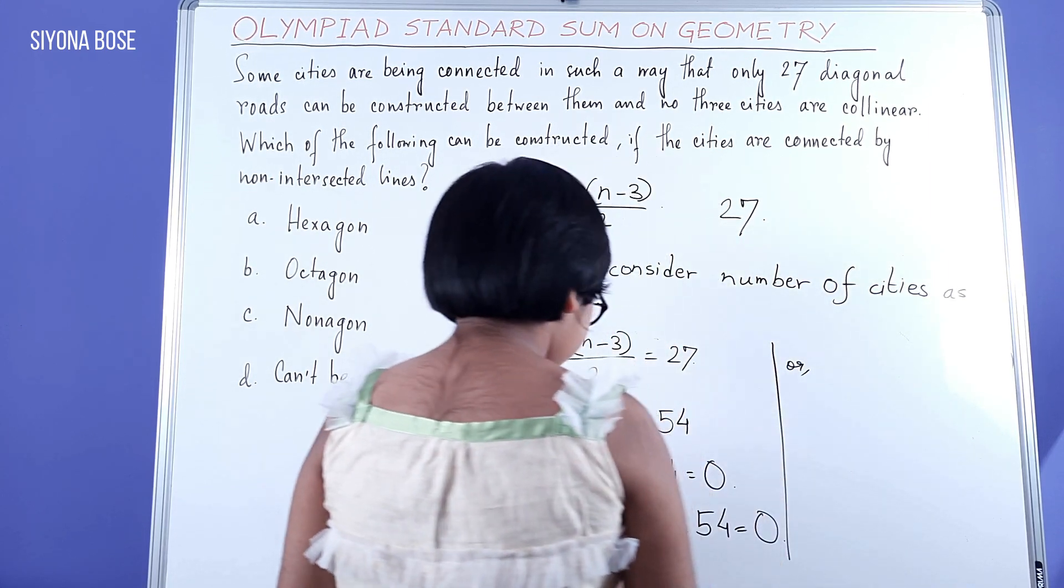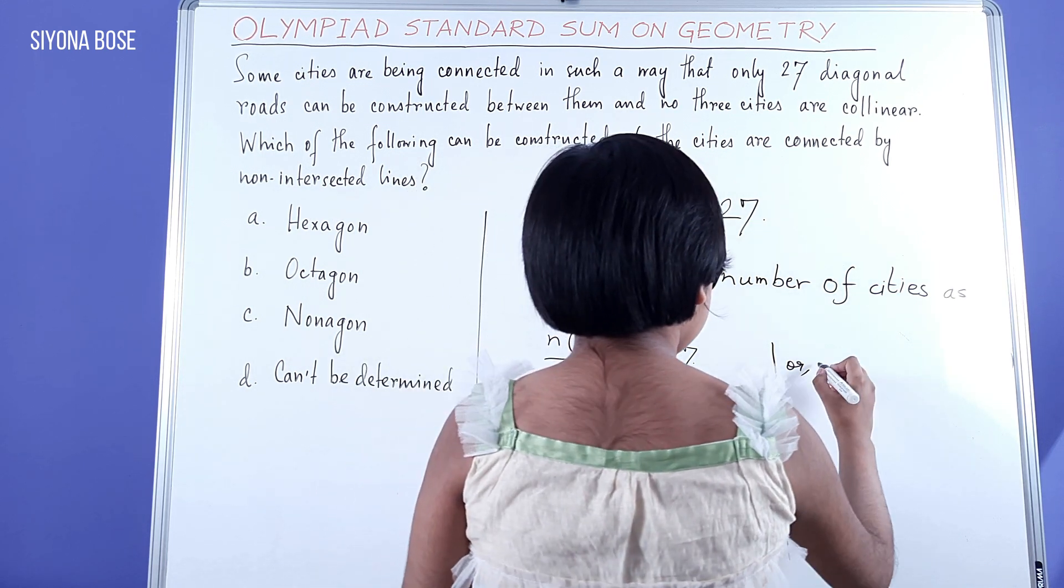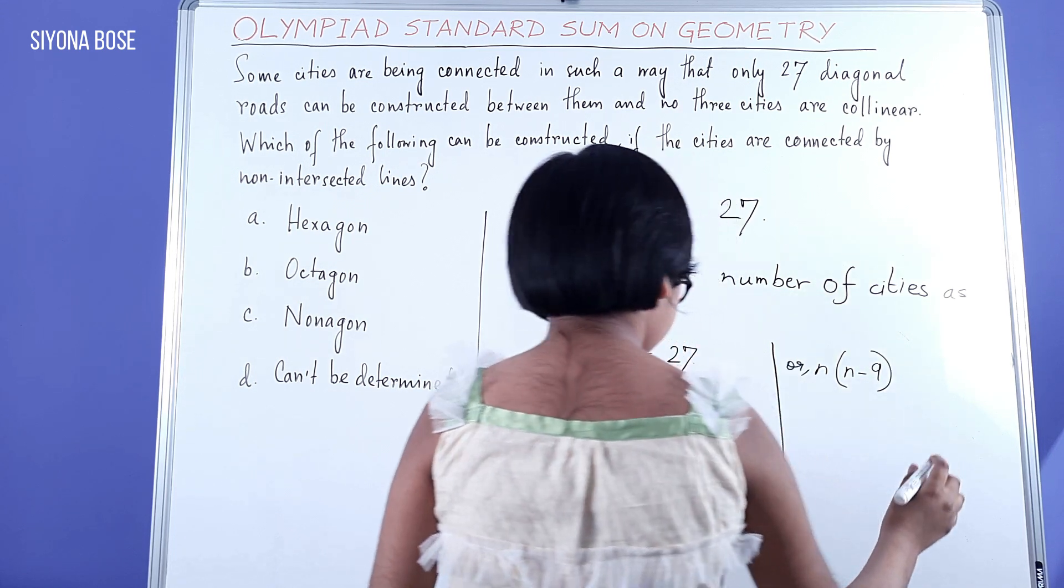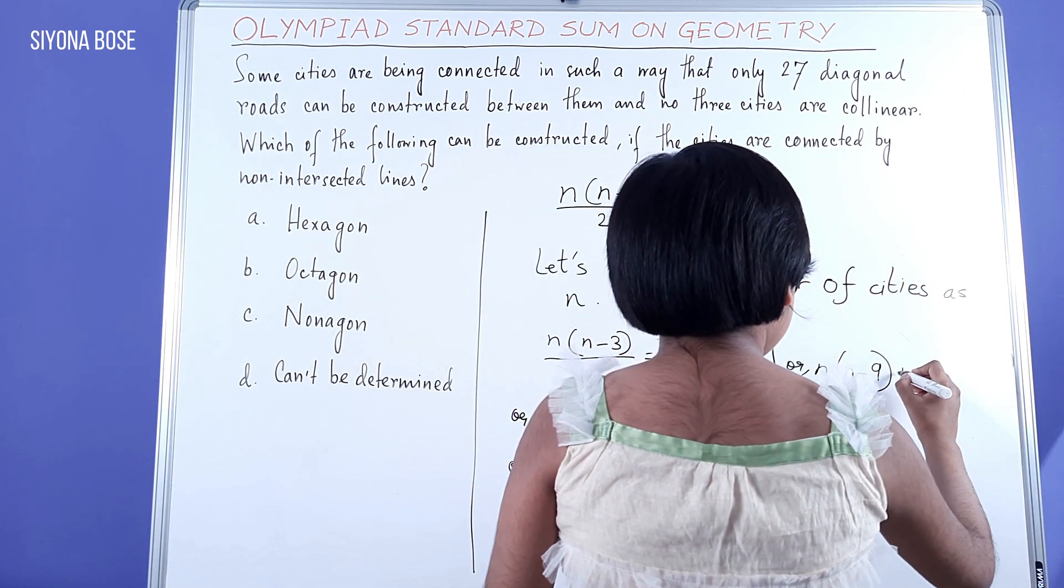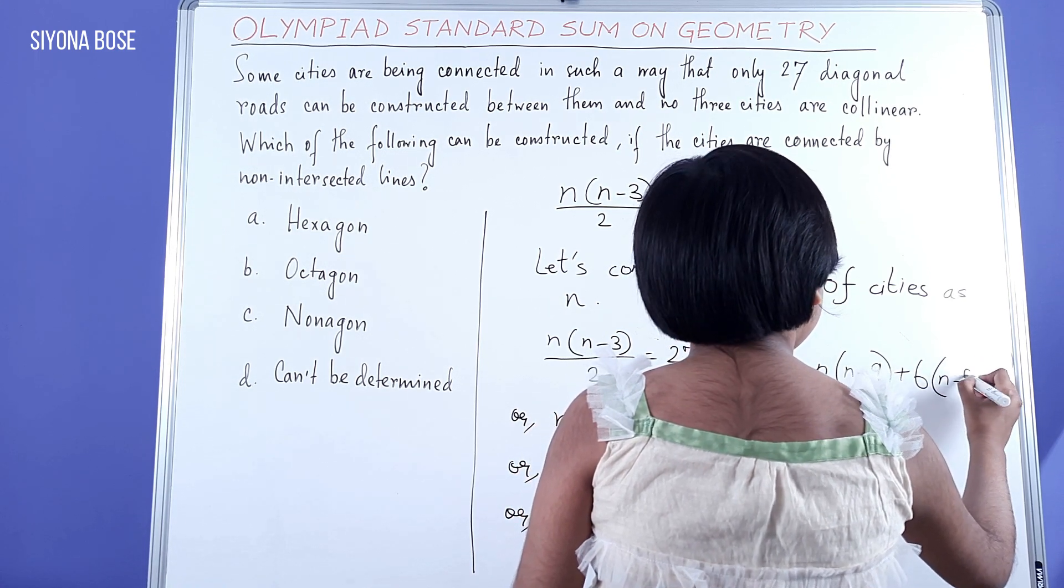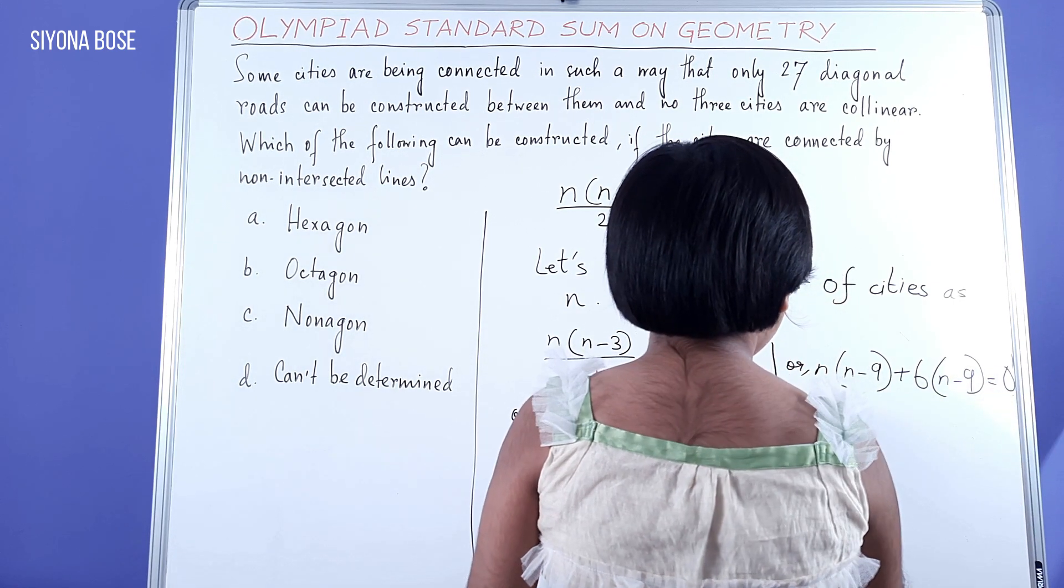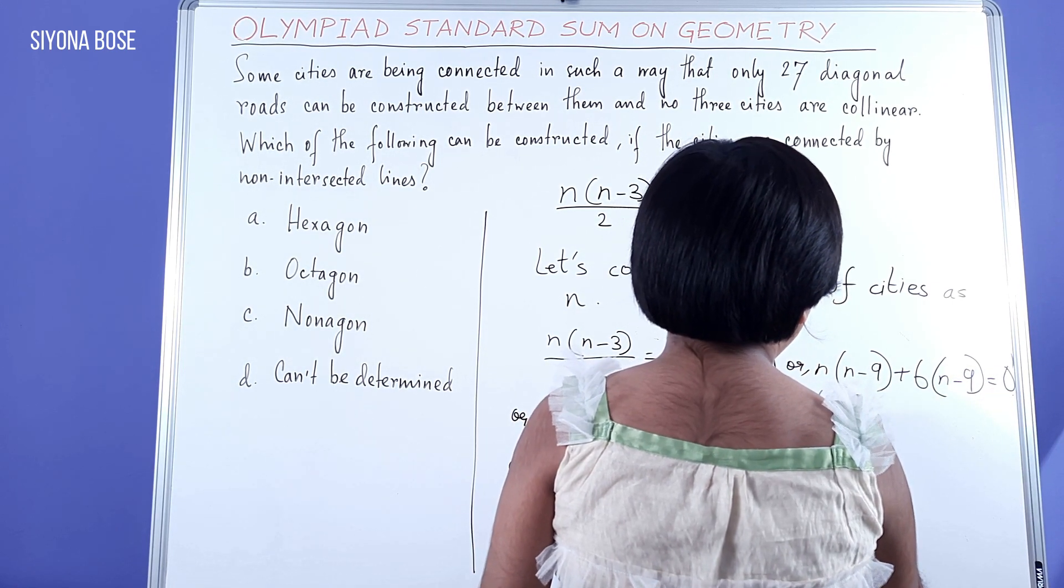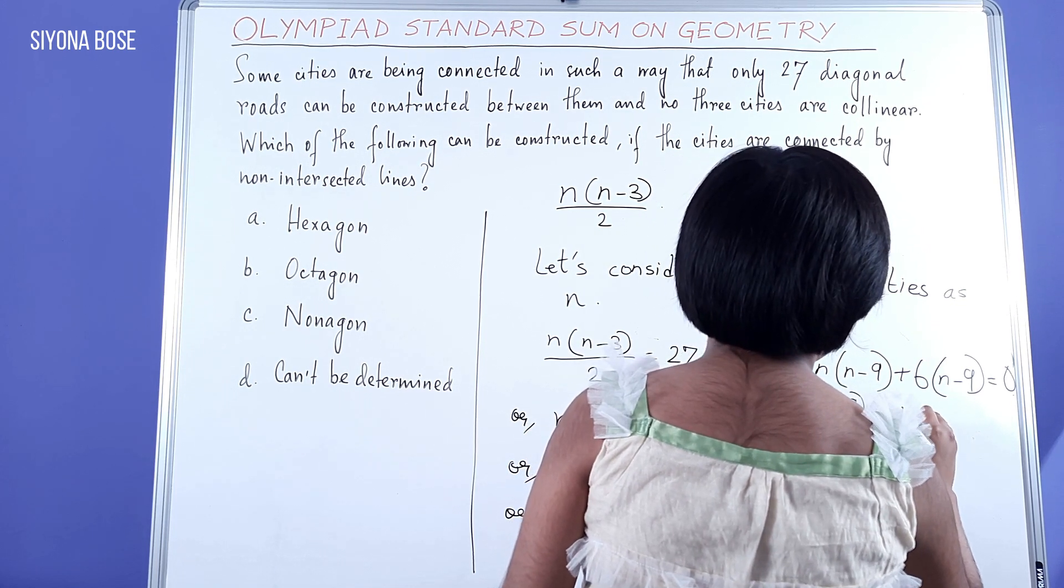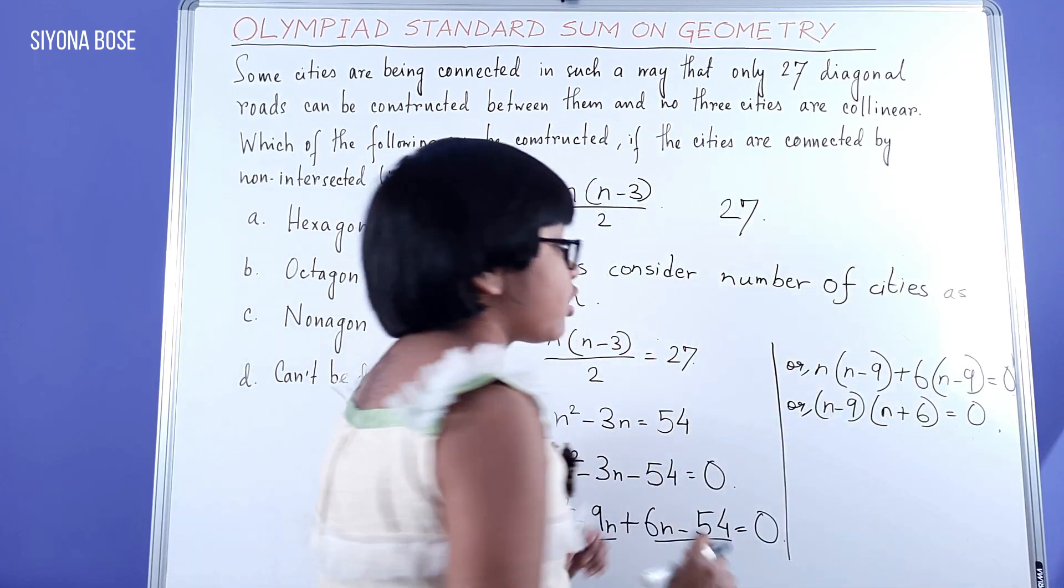We can take common from these two pairs. N minus 9 becomes the common factor, and we are left with n plus 6 in the bracket equal to zero. We have done our factorization.